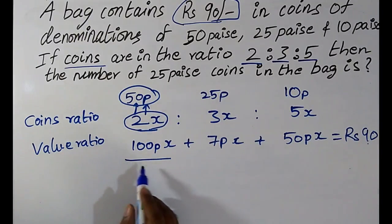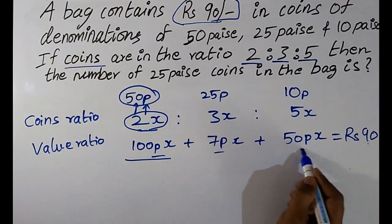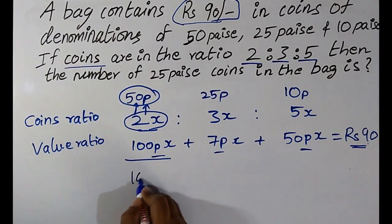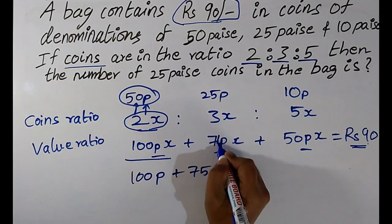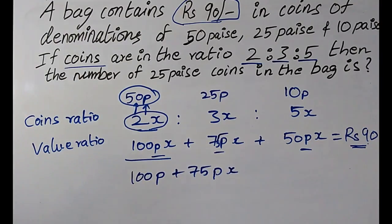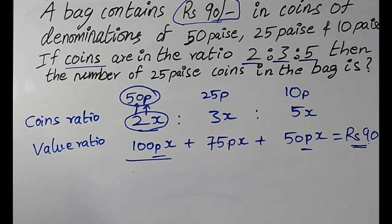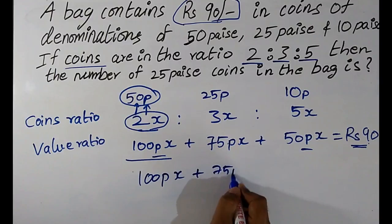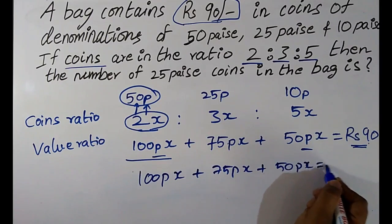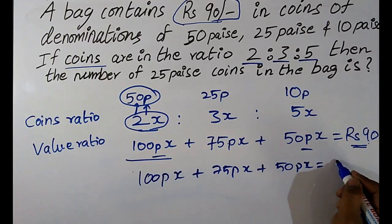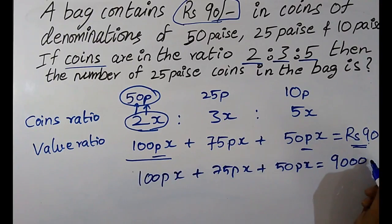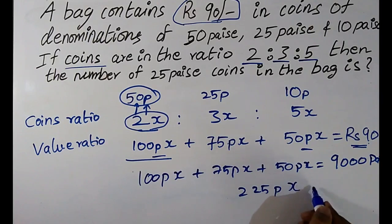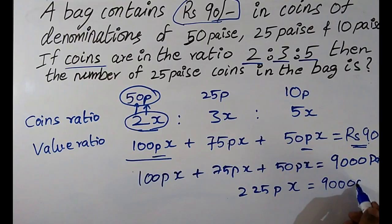The left-hand side is in paise and the right-hand side is in rupees, so units must match. 100x + 75x + 50x paise should equal 90 rupees. Converting 90 rupees to paise: 90 × 100 = 9000 paise. So 225x = 9000.